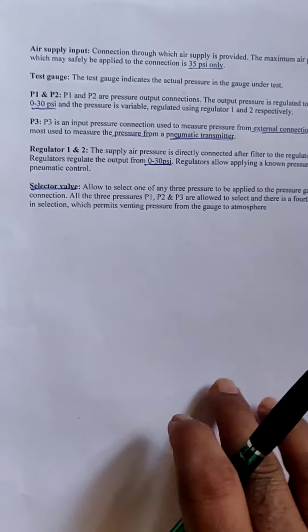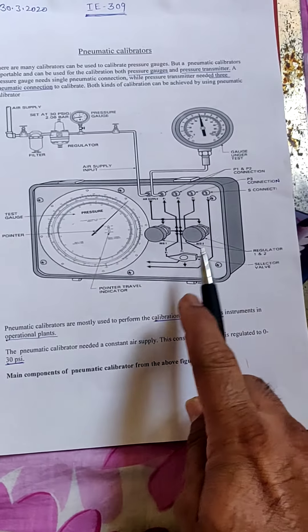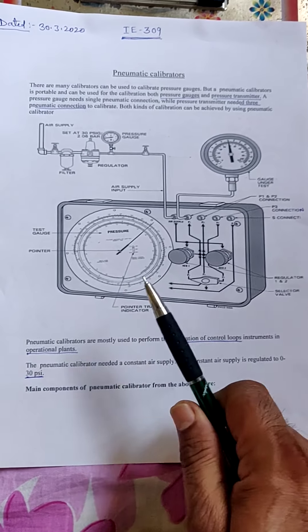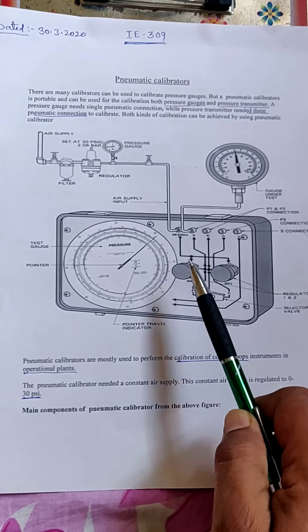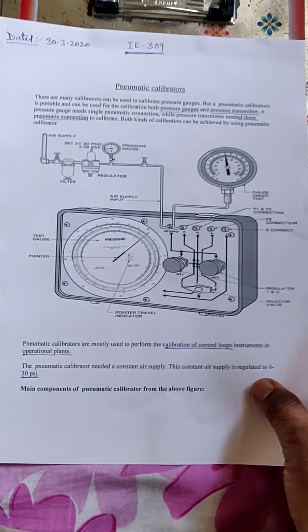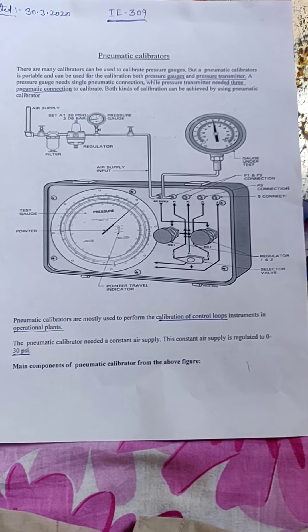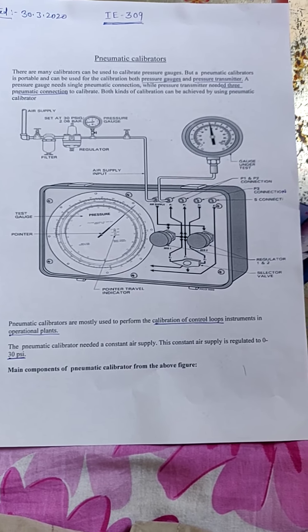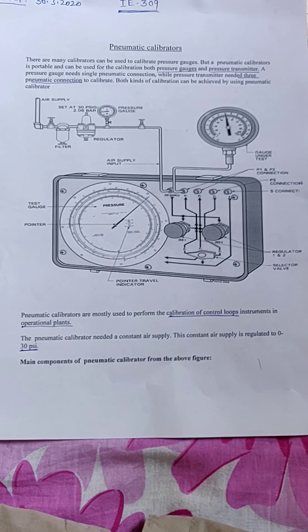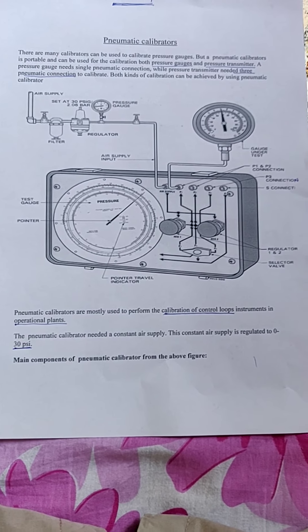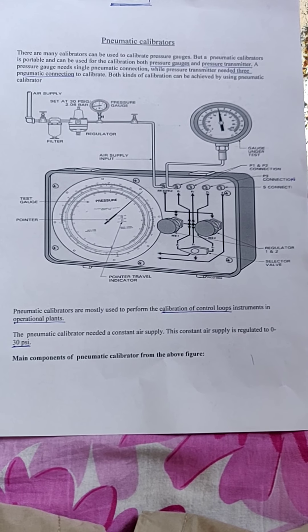This is very useful for industrial purposes for calibration of pressure gauges. This is the main diagram of the pressure gauge calibrator. The main parts of the pressure gauge calibrator are: input air pressure with a supply of around 35 psi, test gauges as shown in the diagram. The test gauge should be connected as shown. P1, P2, and P3 are the three connections in which we can put the test gauge.